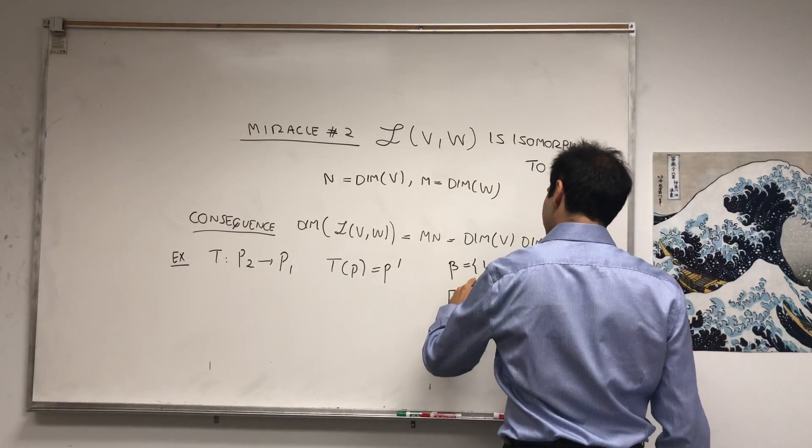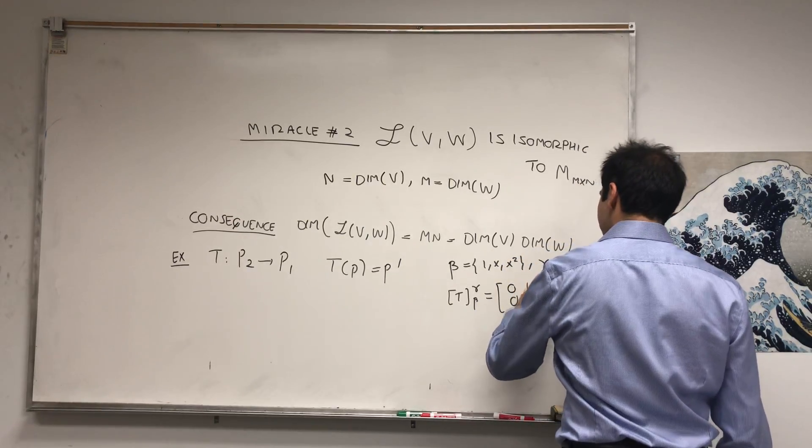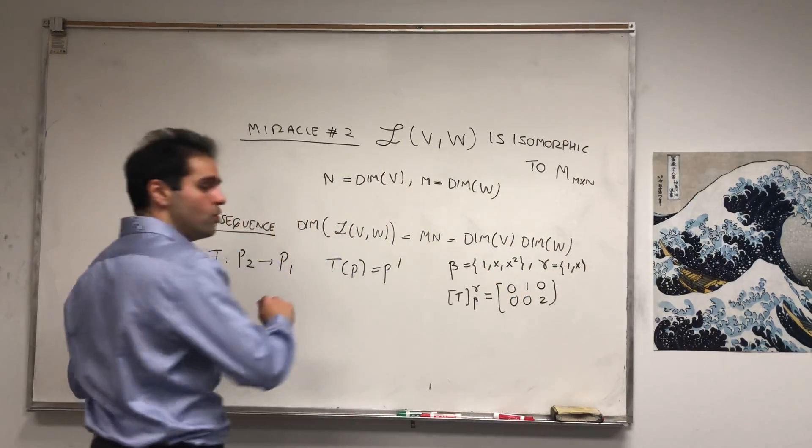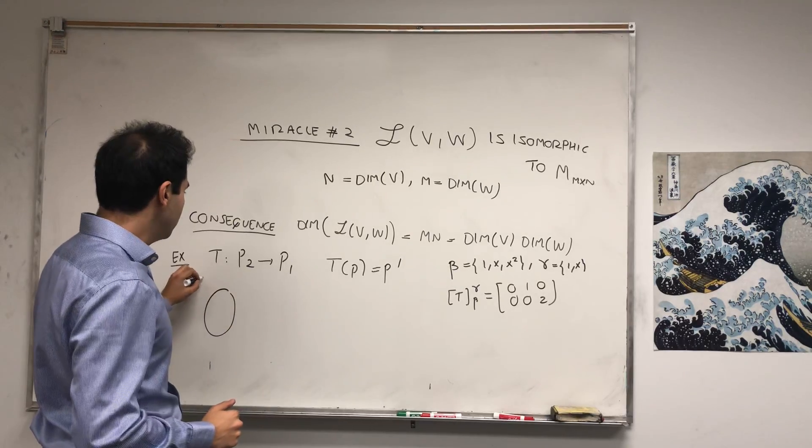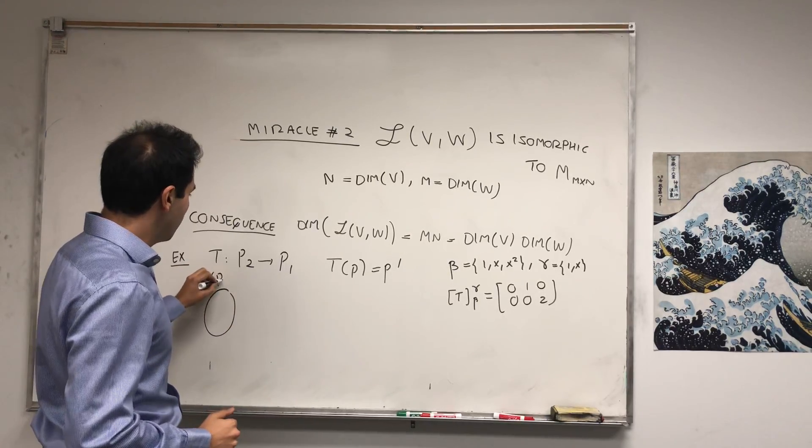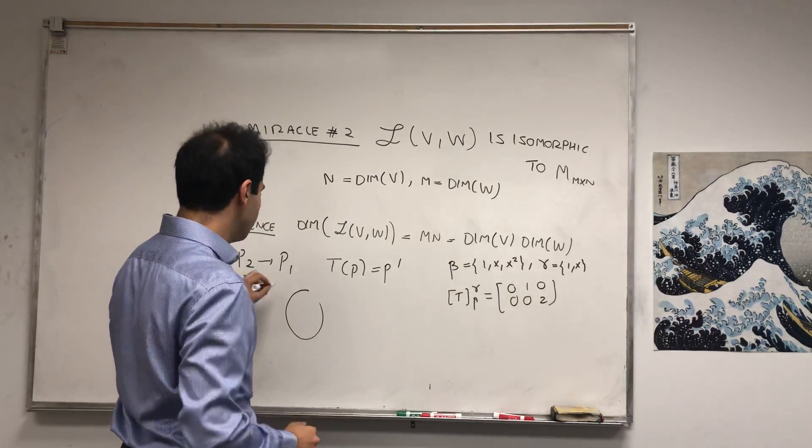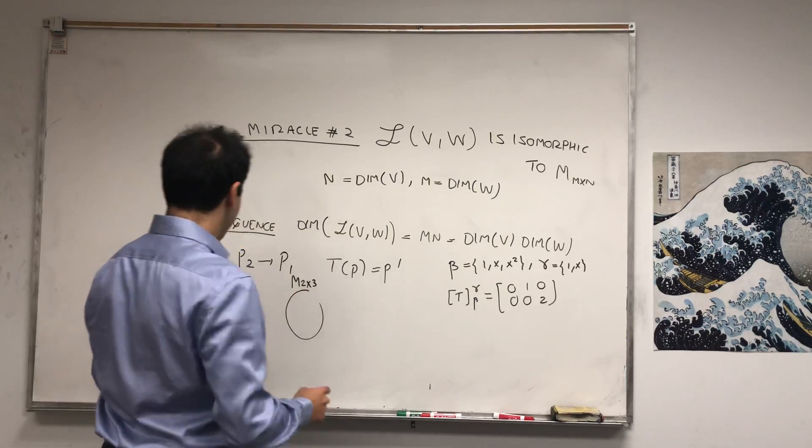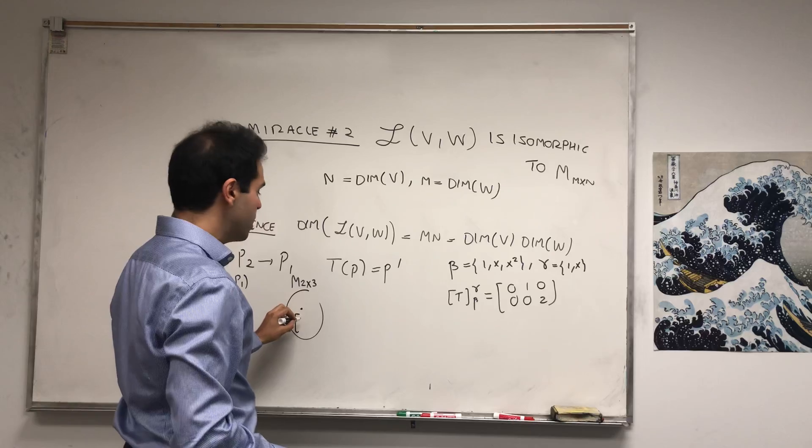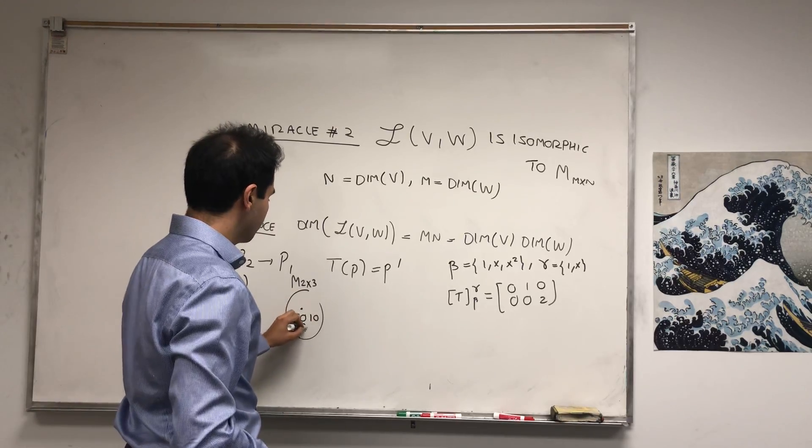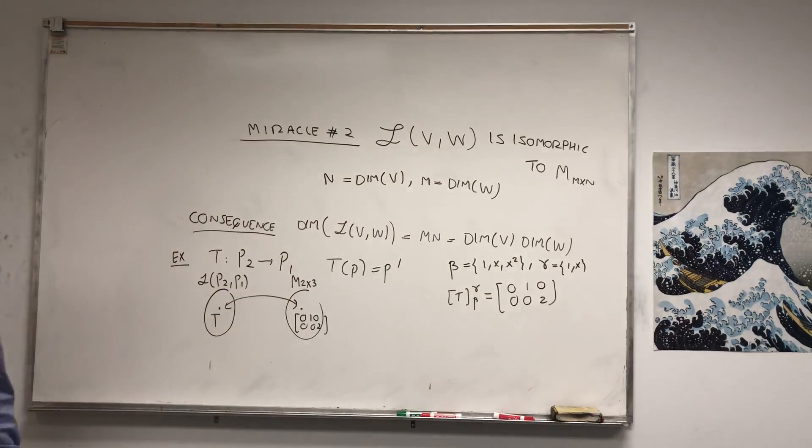From beta to gamma turns out it will be [0, 0; 1, 0; 0, 2], and with this association, it's very easy to go back and forth from the linear transformations from P2 to P1 to the set of 2 by 3 matrices. Because, for example, here you have your T, and using the matrix, you can go back and forth.